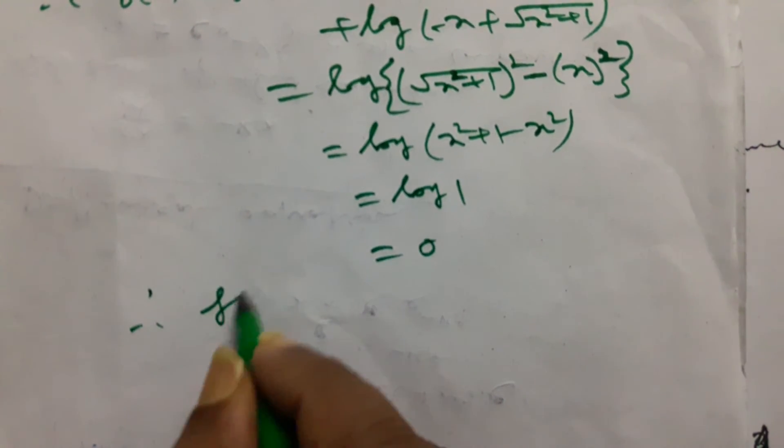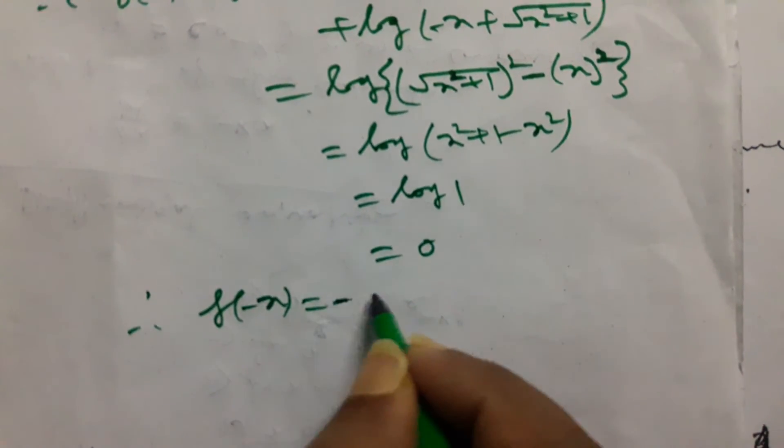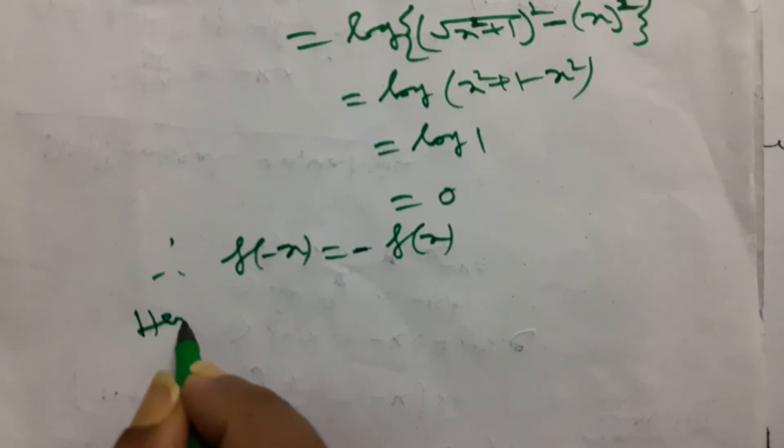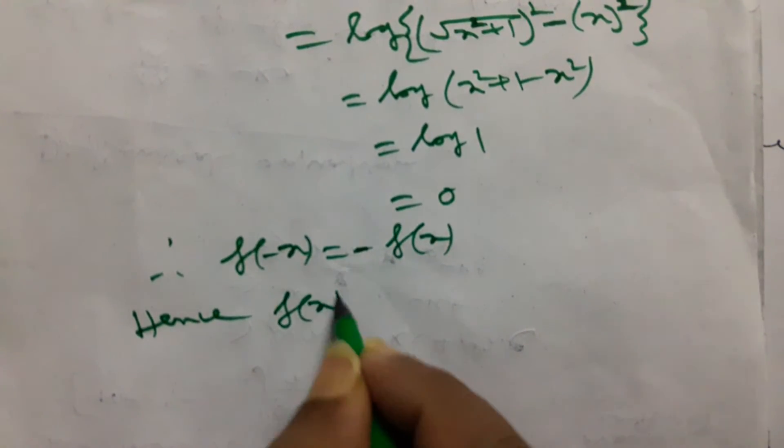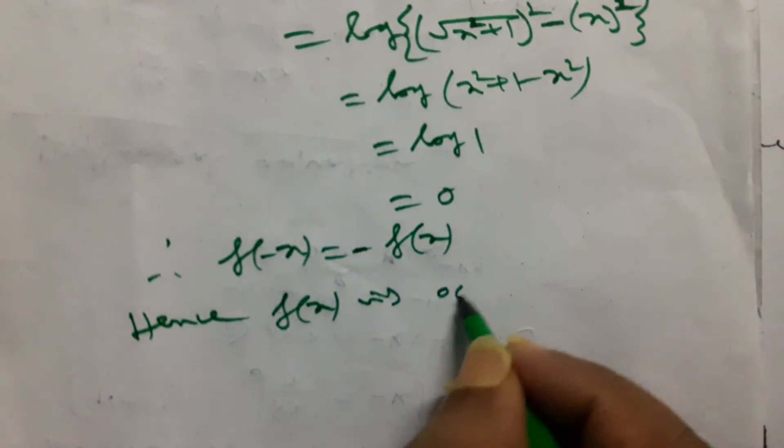Therefore, f of minus x equals to minus of f(x). Hence, f(x) is odd function.